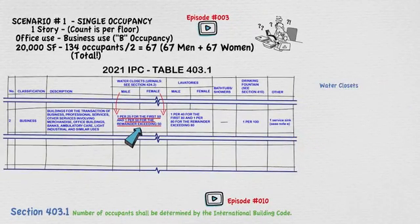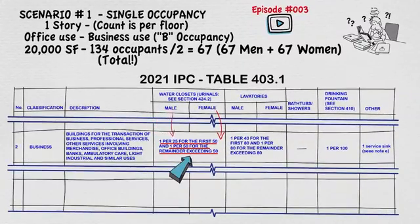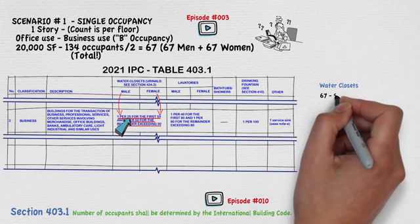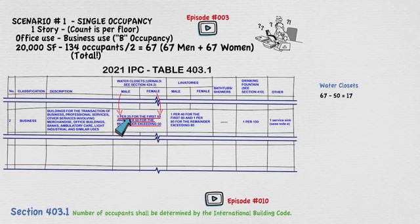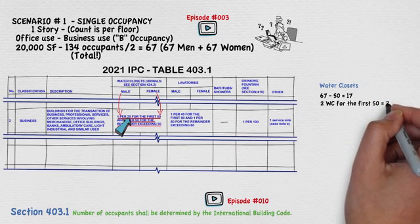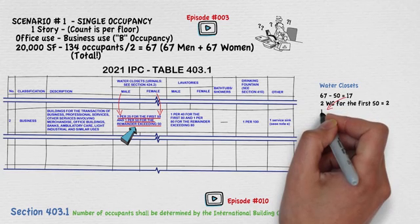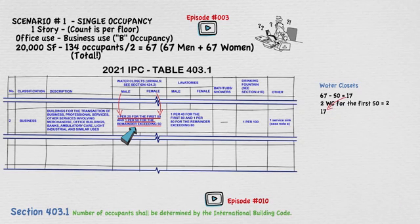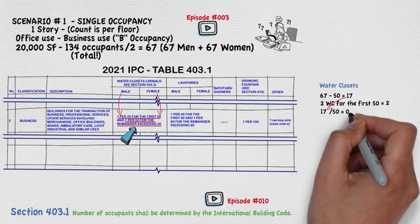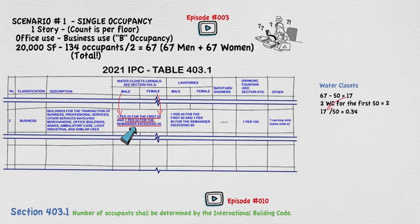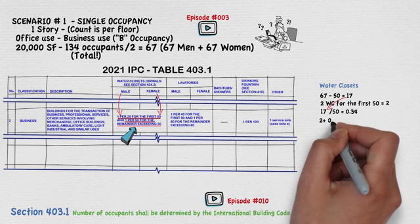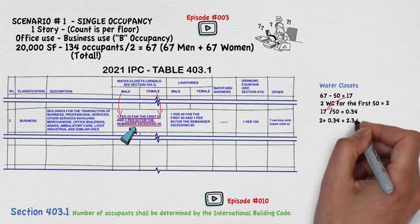Let's start with the water closets. Water closet count is the same for men and women. The requirement states one water closet per 25 occupants for the first 50 occupants. Since we have 67 occupants, we subtract 50, meaning we need 2 water closets for the first 50. Then it's one fixture per 50 of the remainder. The remainder is 17 occupants: 17 divided by 50 equals 0.34. Adding 2 plus 0.34 gives a total of 2.34 water closets.